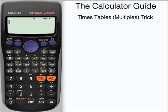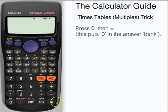To start, we're going to press zero on the calculator and then equals. This will put zero into the answer bank. We can see zero on the answer line here.